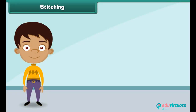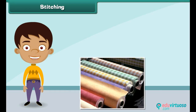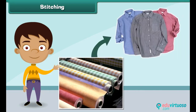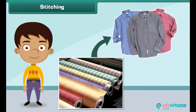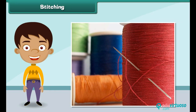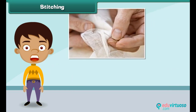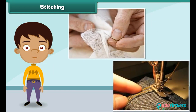Stitching is the process by which fabrics are converted into clothes. It involves sewing a fabric with needle and thread. In olden days, stitching was done with hands, but nowadays stitching is done with machines.